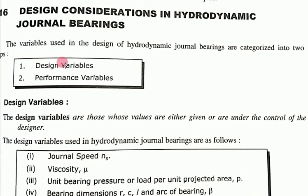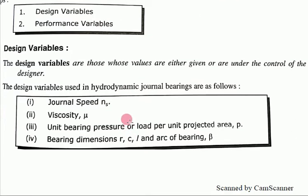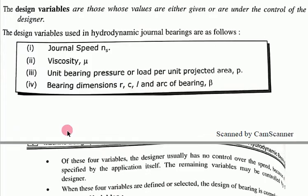In design considerations, we have two things: design variables and performance variables. Design variables are those whose values are either given or are under the control of the designer. The design variables include journal speed (Ns), viscosity, unit bearing pressure or load per unit projected area (P), and bearing dimensions: R, C, L, and beta (the arc of bearing).